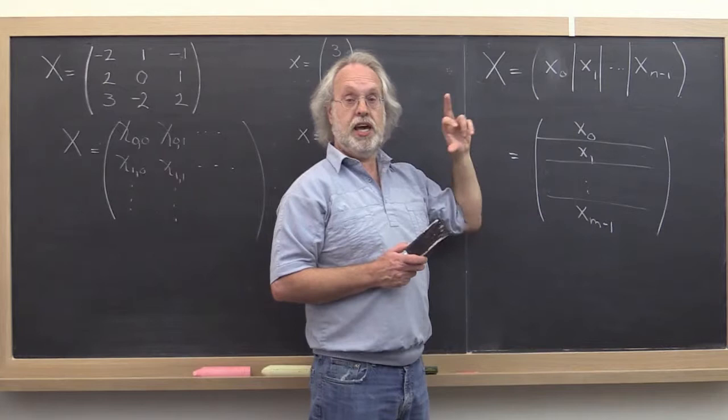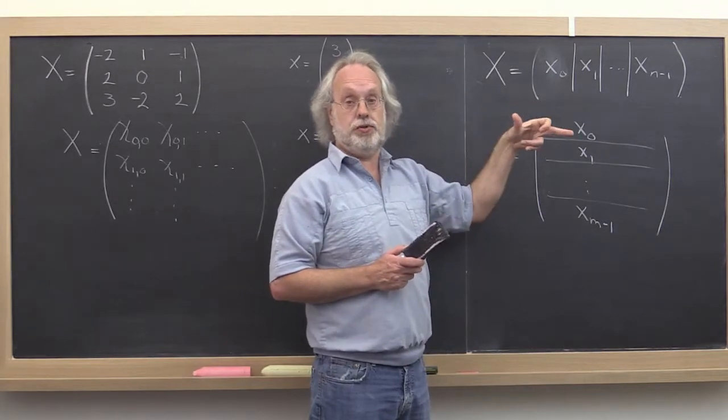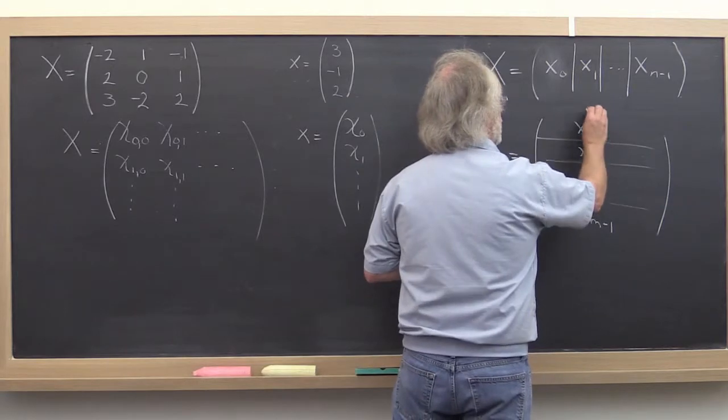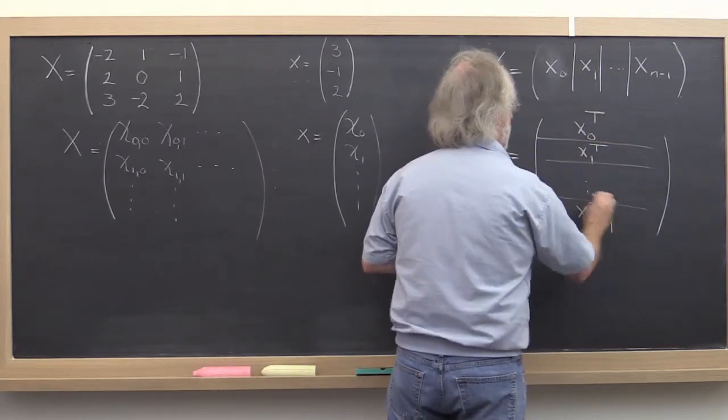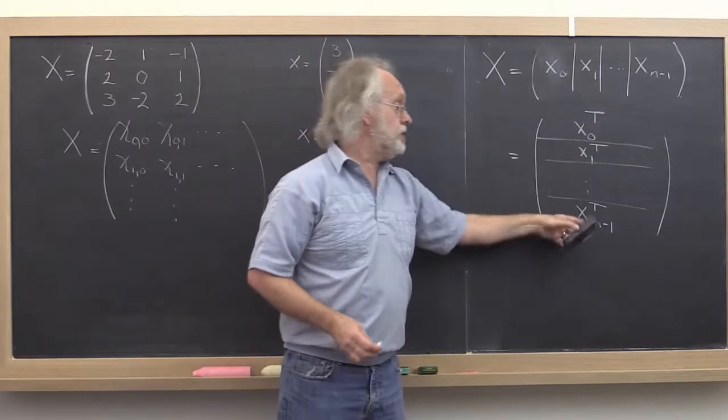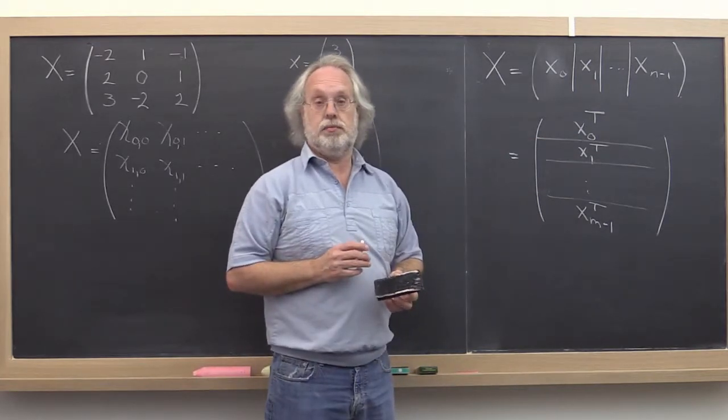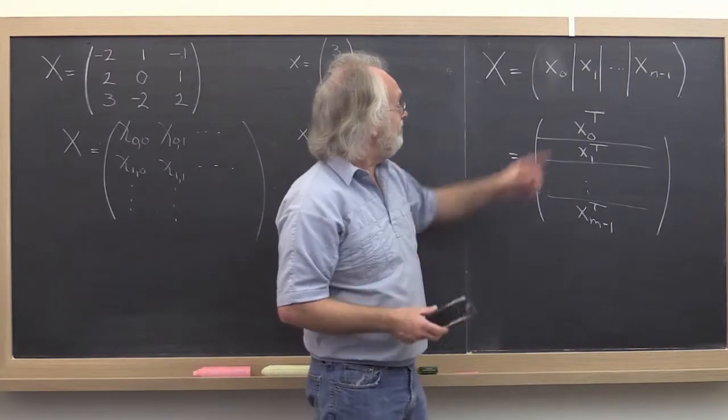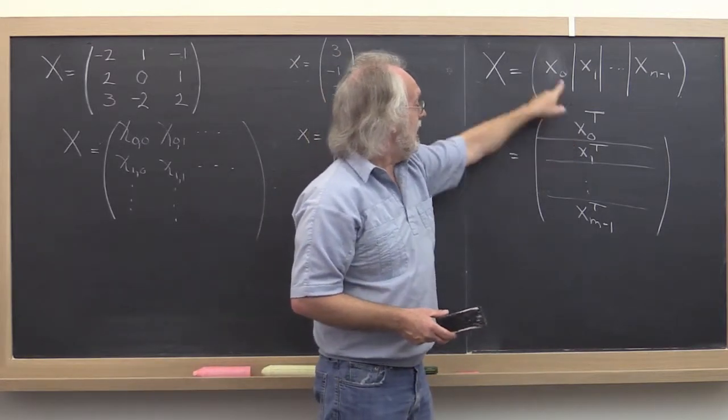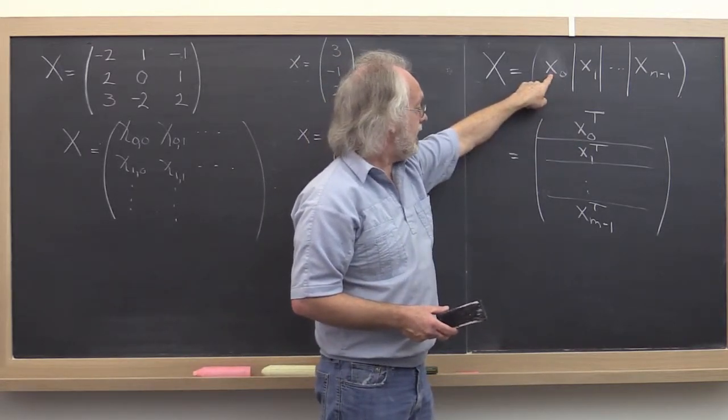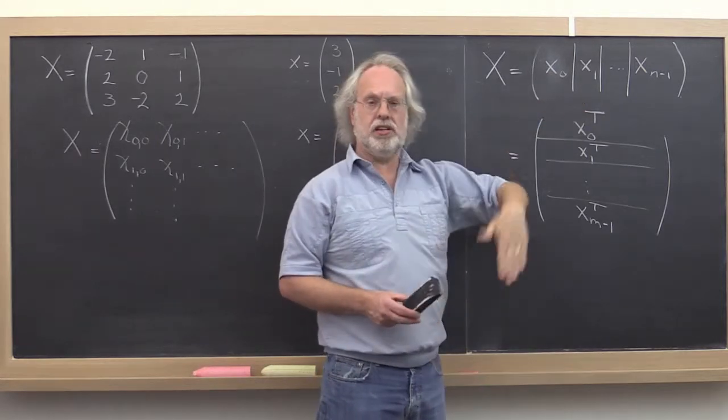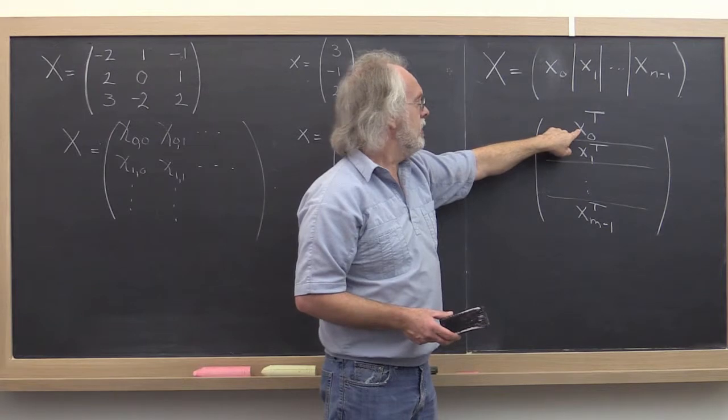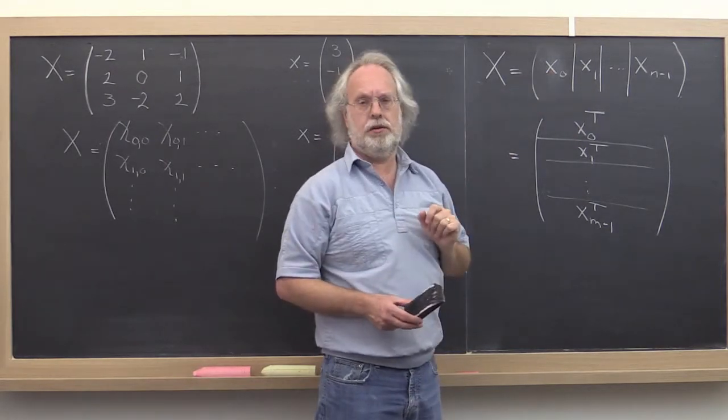Now notice that if you take a column vector and you transpose it, you end up with a row vector. So we can indicate that these are actually rows by putting a transpose as part of the symbols that represent these rows. But then you still have a question of, is this really the first column of x that we happen to have put on its side? Or is this a different vector from the first column of x?